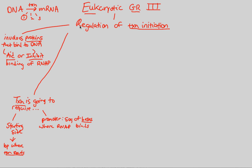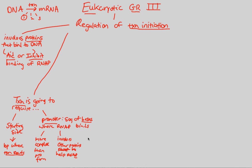What is this promoter region involved in, in terms of regulation? The key idea is that our promoter region, as compared to our prokaryotic ancestors, is much more complex — a big theme for us as eukaryotes. In addition, this promoter actually involves the usage of other proteins to help RNA polymerase. We're going to talk about those proteins that will come in at the promoter region and help out RNA polymerase with transcription.